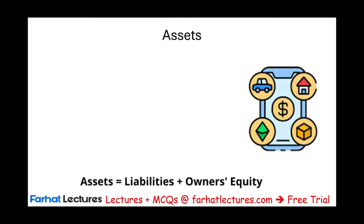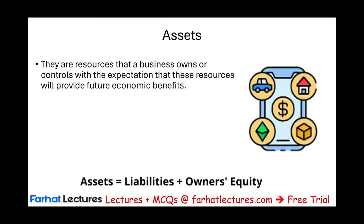Let's start by defining assets. Assets are resources that a business owns or controls. You don't have to own an asset — as long as you can use it to your own end, it's still an asset. With the expectation that these resources provide future economic benefit. An asset is something that a company can use to provide itself some sort of future economic benefit — usually to generate revenue, profit, or more cash.